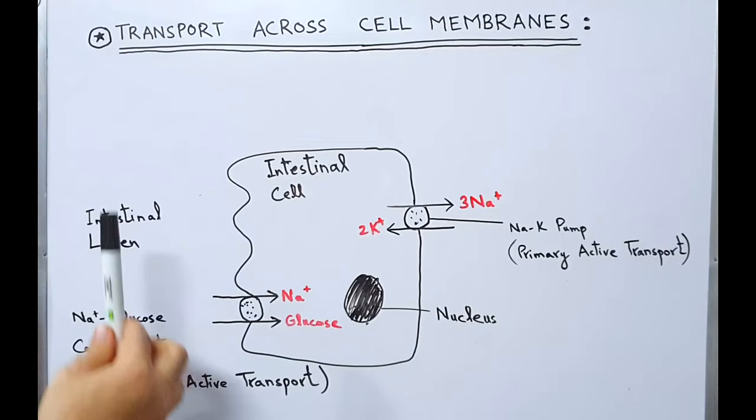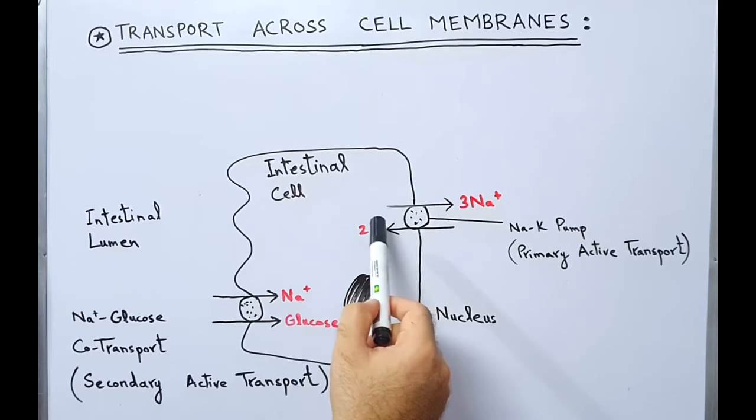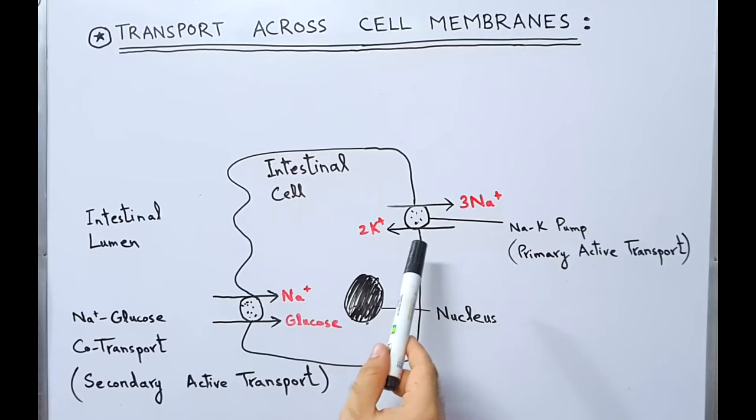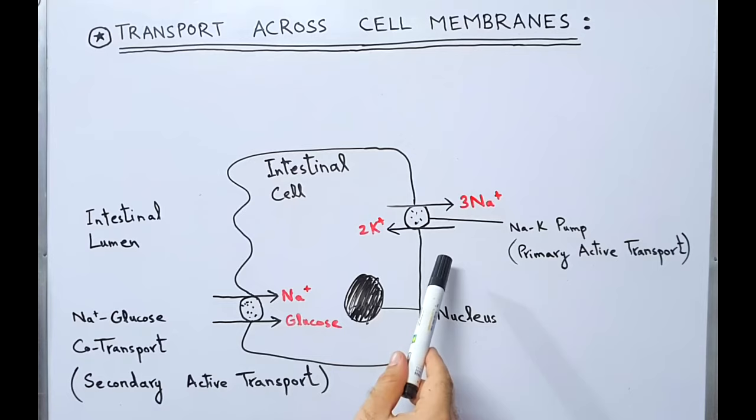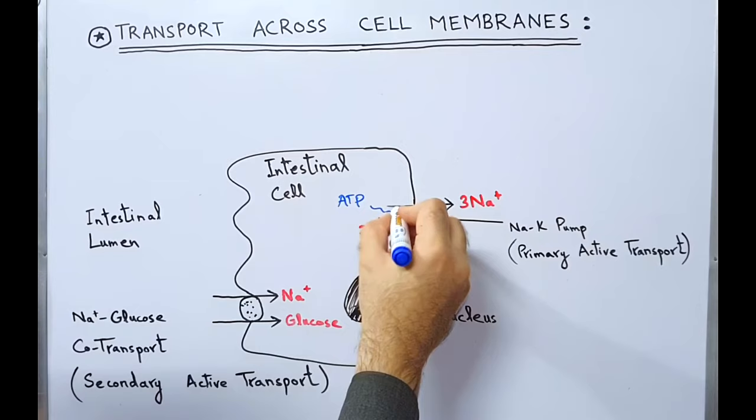Consider an intestinal cell: this is the intestinal lumen and this is the basal side of the cell. Two transport mechanisms are shown. The sodium-potassium pump is transporting sodium out of the cell and potassium into the cell, thereby maintaining a sodium-potassium gradient — potassium is more inside and sodium is more outside. This gradient is maintained by the sodium-potassium pump using ATP energy.